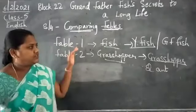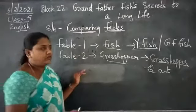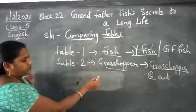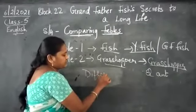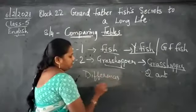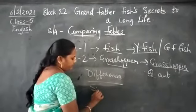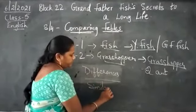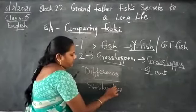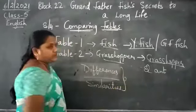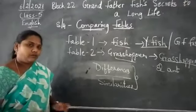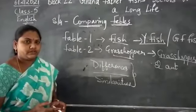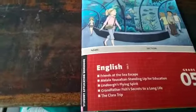Same like this in the workbook — they have given you Fable 1, Fable 2, and similarities. Today we are going to write the differences and similarities. Only by writing the differences and similarities can we compare the two fables. Now open your workbook. Block number 22, S4.